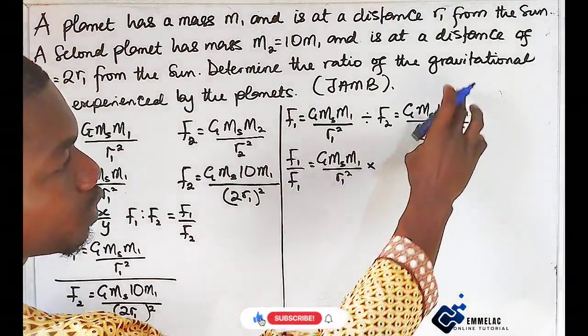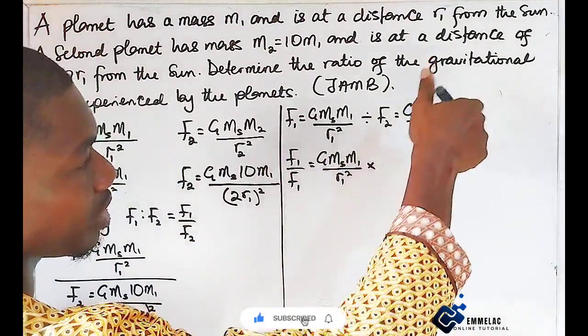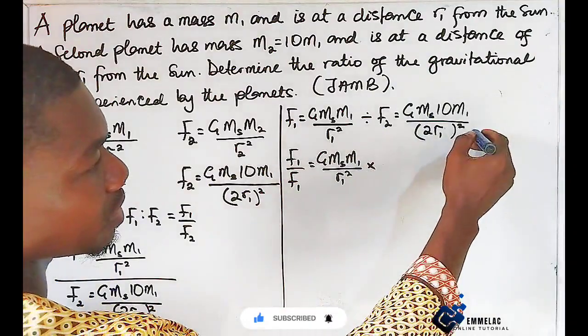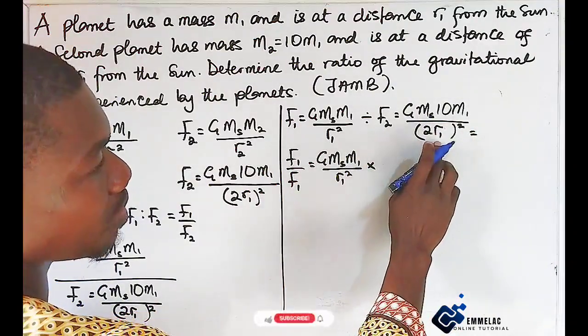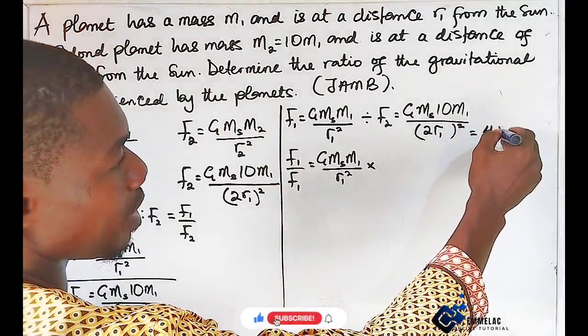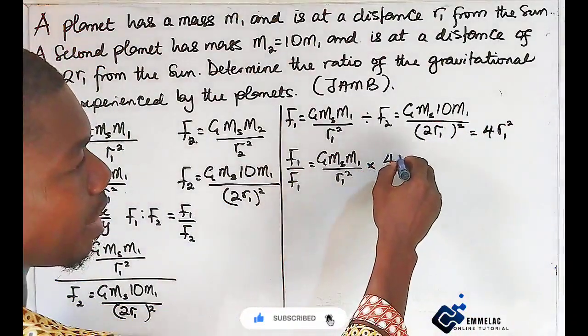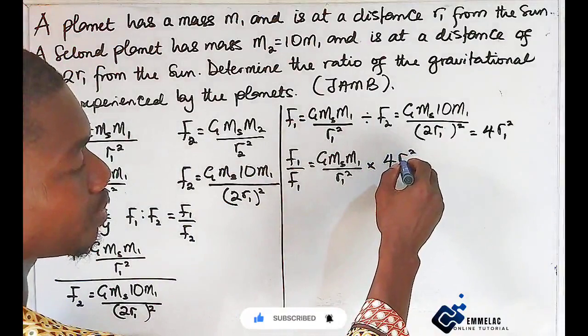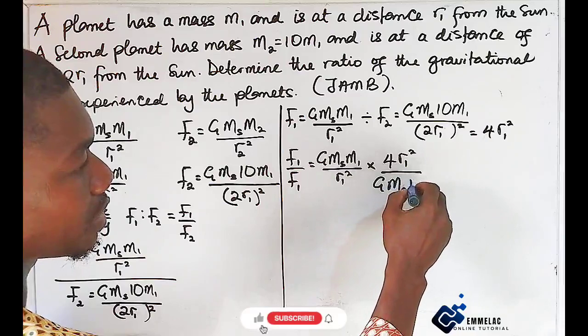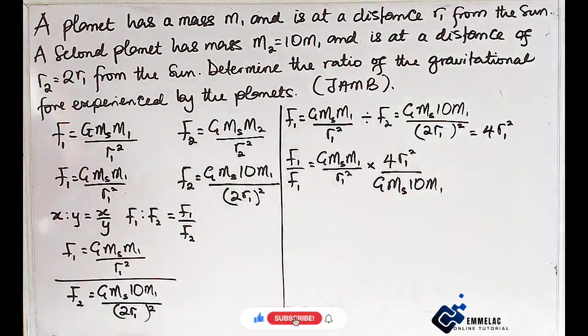We have to flip this fraction because of the division, so we have (2r1)² all over GMs(10m1).